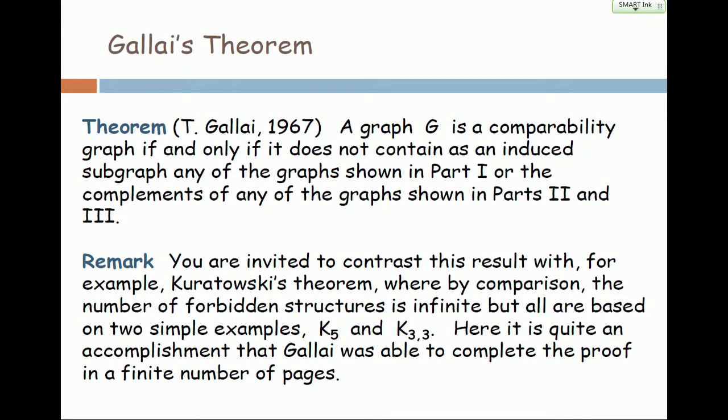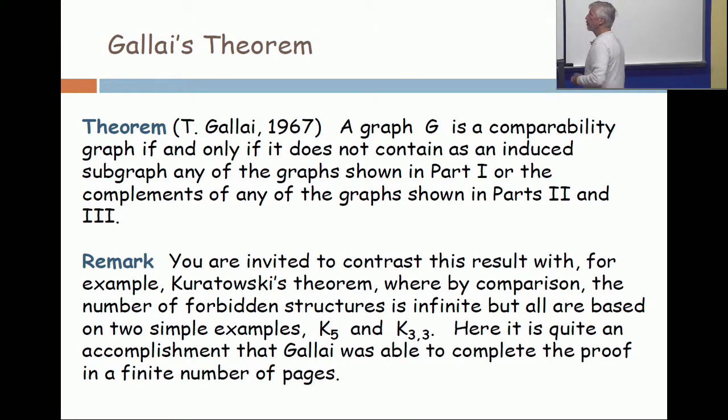A Hungarian named Tibor Gallai, who was a contemporary of Erdős, proved in 1967 a characterization, and he listed all the forbidden graphs.